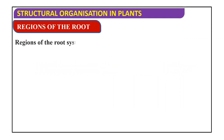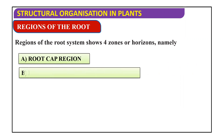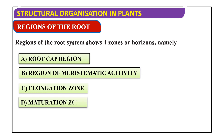We have four regions — you can say four zones or horizons of root. The first one is root cap region, then we have the region of meristematic activity, then the elongation zone, then the maturation zone.